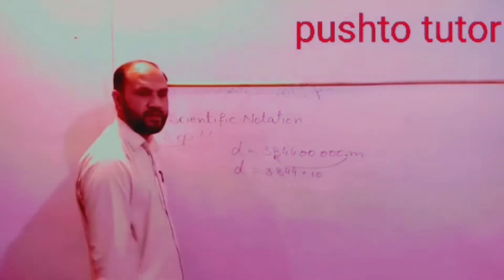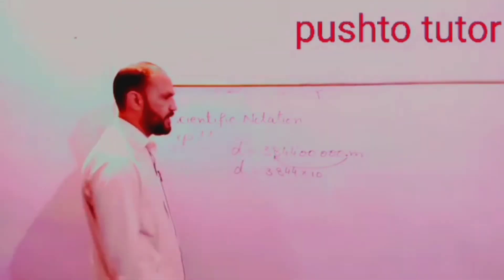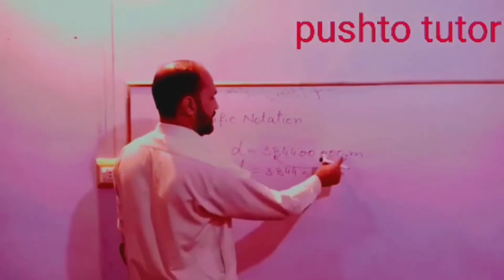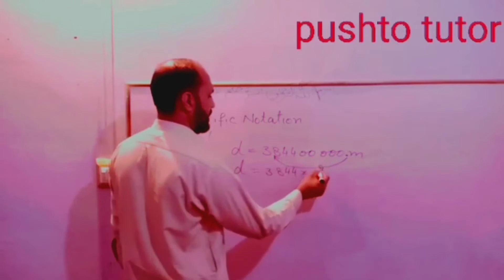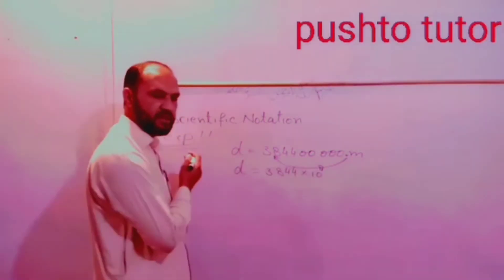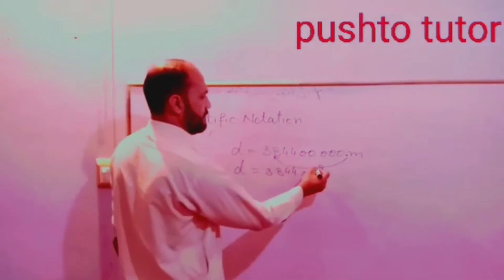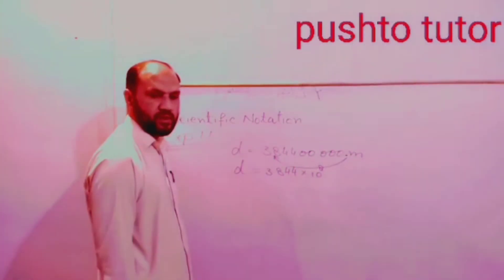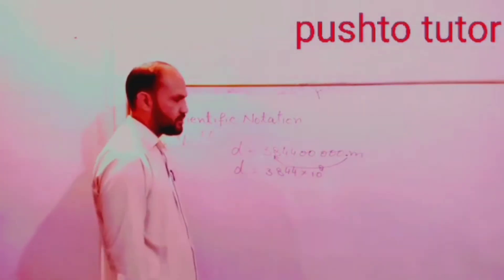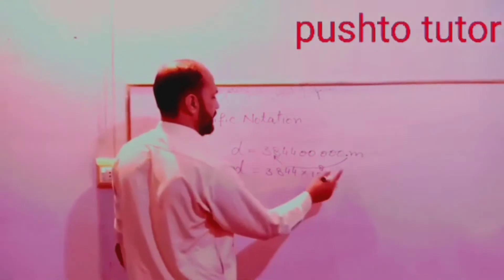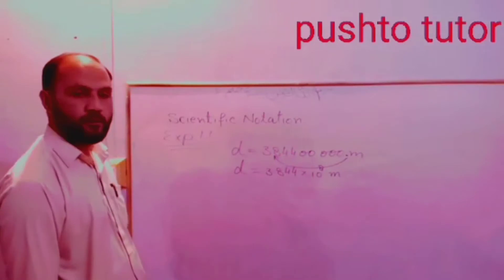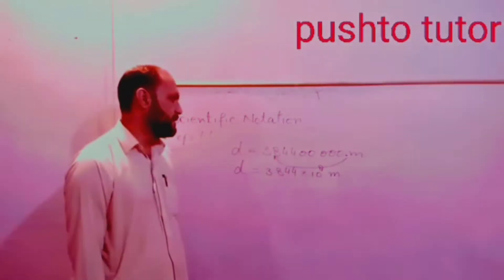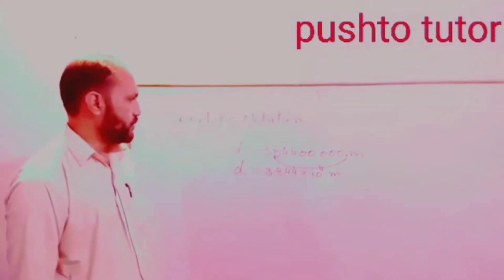We place the decimal point after the first non-zero digit. Counting the decimal places: 1, 2, 3, 4, 5, 6, 7, 8 — that is 8 decimal places. Since we moved the decimal point to the left side, the exponent is positive. So the answer is 3.844 × 10^8 meters, which is the standard form or scientific notation.